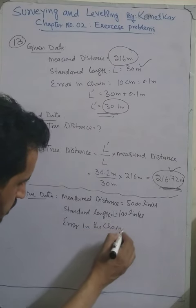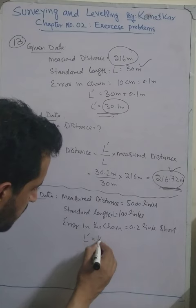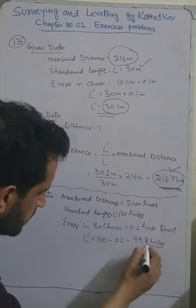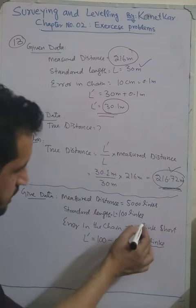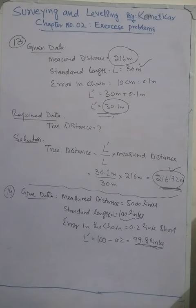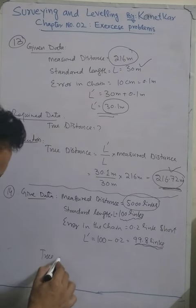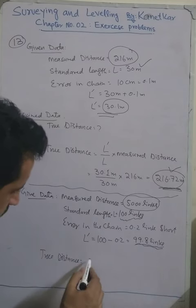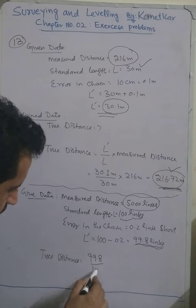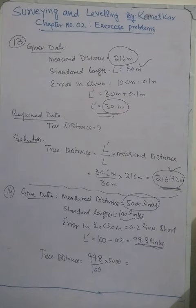The length of the chain during measurement is 100 minus 0.2, which equals 99.8 links. The measured distance between the two points was 5000 links. Applying the formula: true distance equals 99.8 links divided by the standard length of 100 links, multiplied by the measured distance of 5000 links.